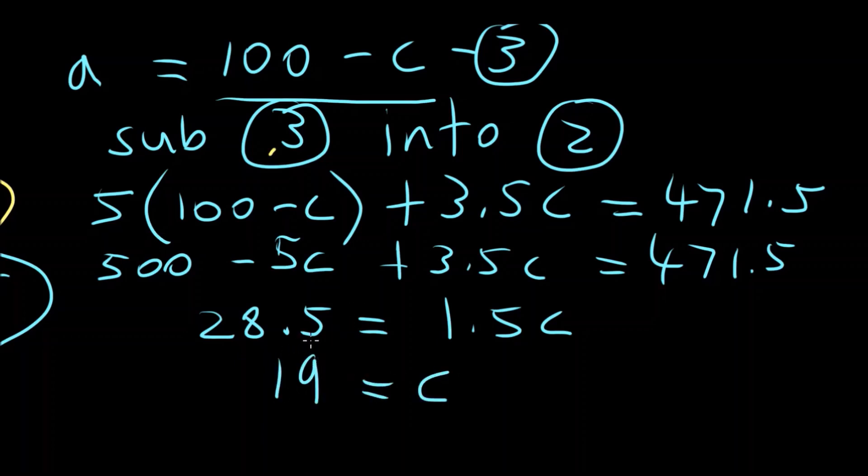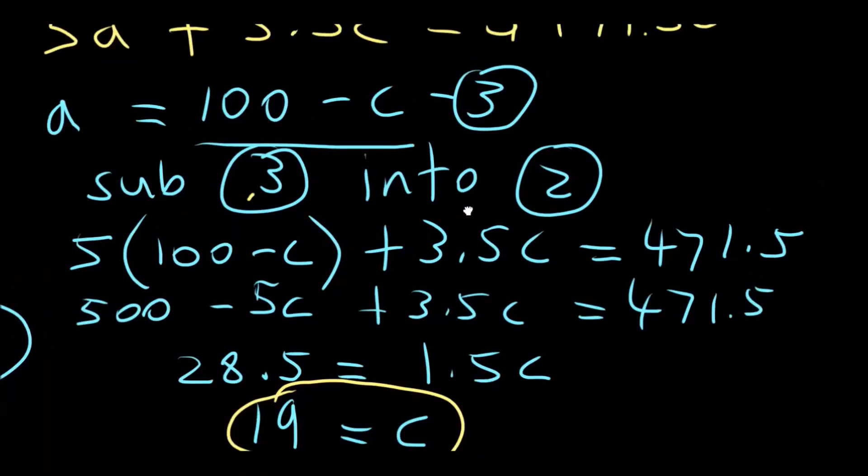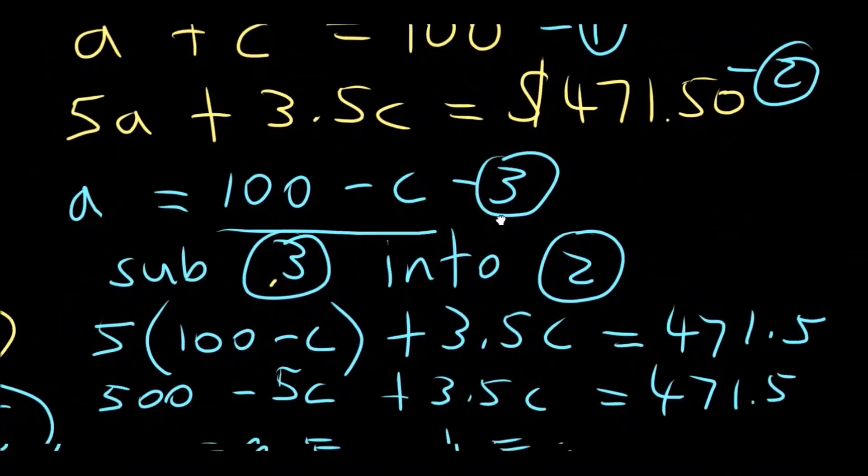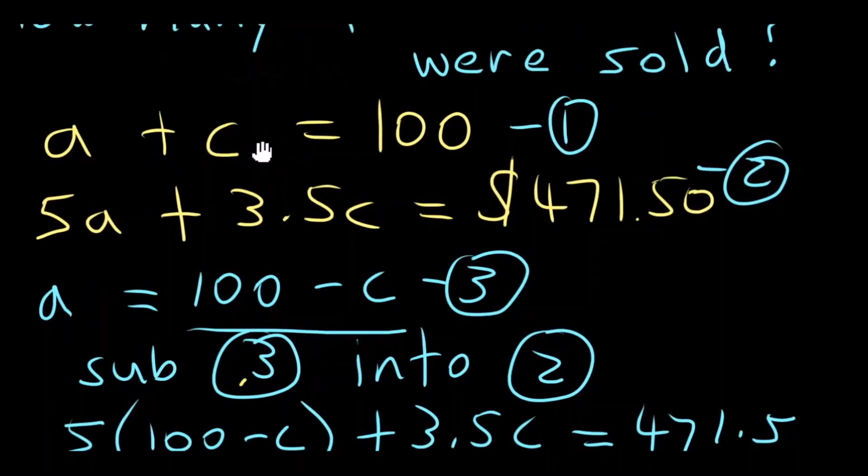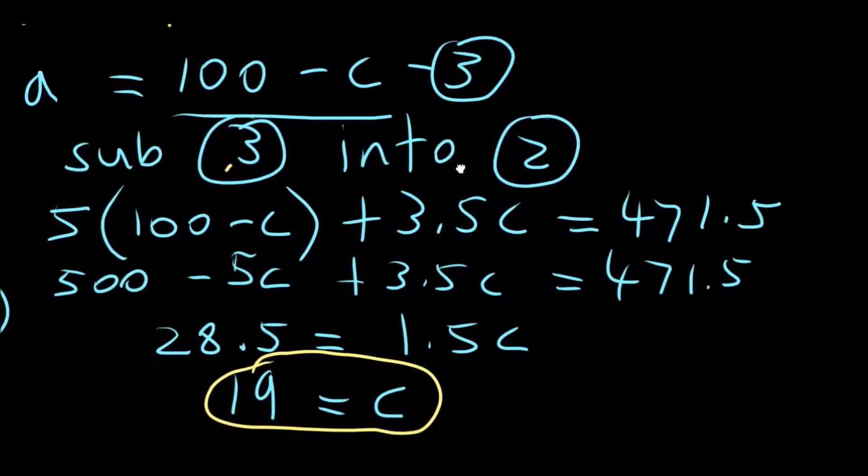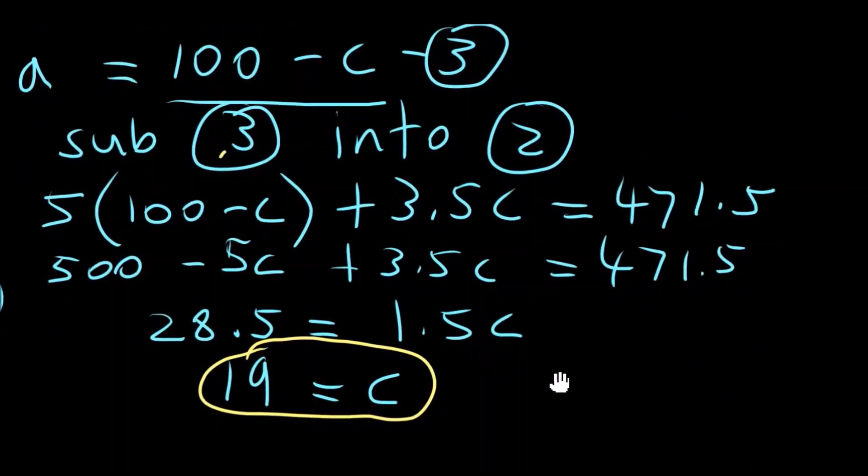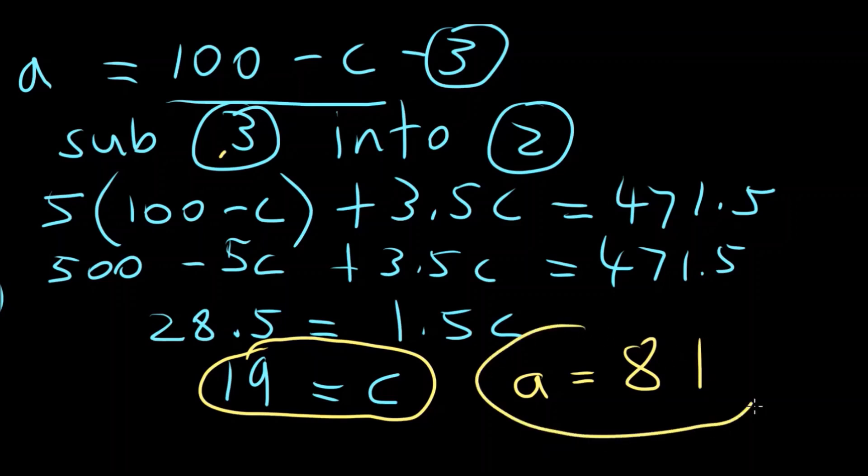So there are 19 children. And then we can use that information. So C equals 19. If we know that the number of adults plus the number of children equals 100, then it would follow that A must equal 100 minus 19, which is 81. So the answer is 19 children and 81 adults.